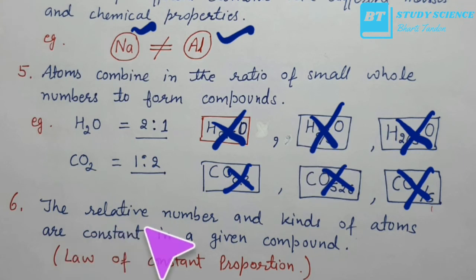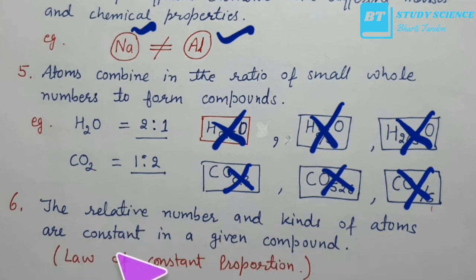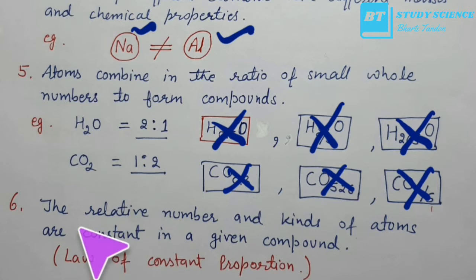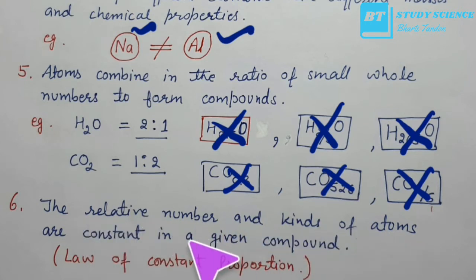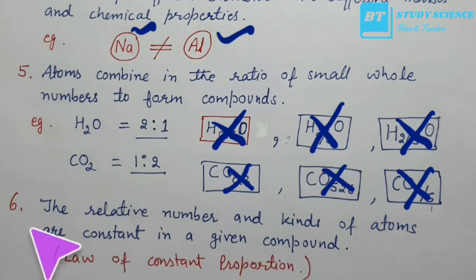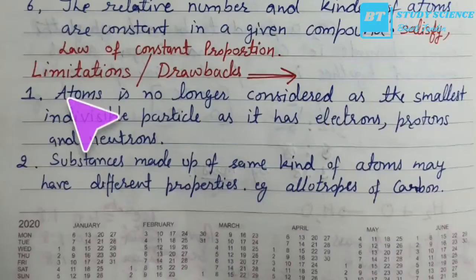Sixth, the relative number and kind of atoms are constant in a given compound. This sixth point demonstrates the law of constant proportion.